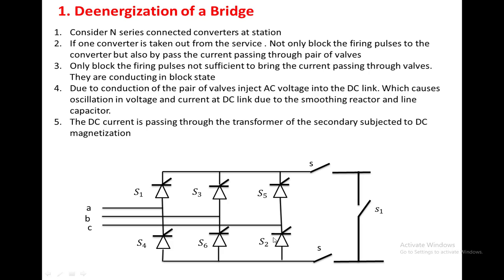Once the current is transferred from the conducting valve to the bypass valve, you then have to transfer it to the isolators. The two isolators are closed so that current is transferred to the isolator. Whenever the current is transferred to the isolator, no current is passing through the converter, and we can remove this converter from the string where N converters are connected.